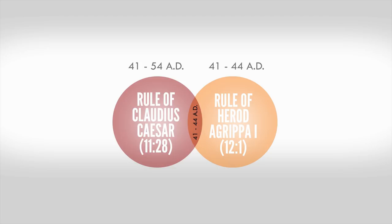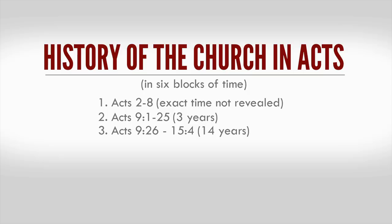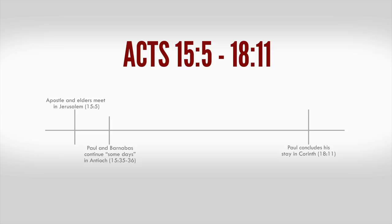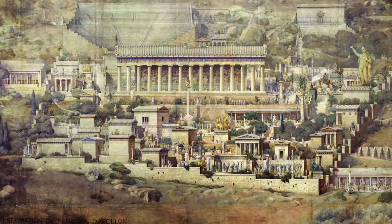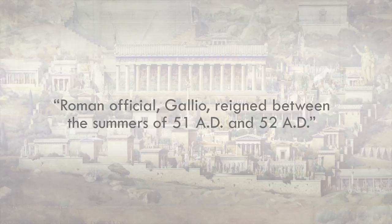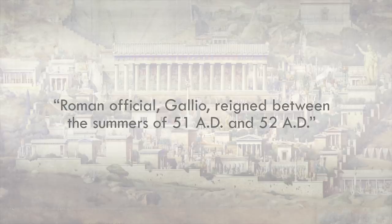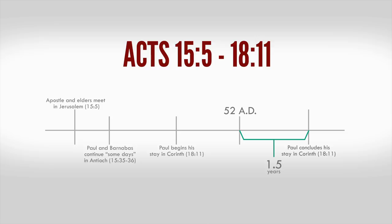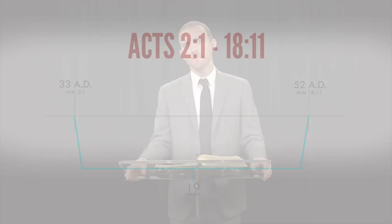Our fourth block of time is going to be Acts 15:5 through Acts 18:11. Within this block, Paul will wait some days before setting out on his second missionary journey. The end of this block is one of the most well-documented dates in secular history during this time. An inscription on a famous archaeological find in the city of Delphi indicates that a man named Gallio, the Roman official appointed over Corinth, reigned between the summers of 51 and 52 AD. Scripture records that Paul was in Corinth for a year and a half, Acts 18:11, but much of that was probably after he stood before Gallio in Acts 18:18.